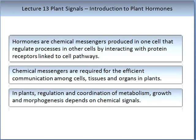We will start this topic on plant hormones with a definition of a hormone. A hormone is a chemical messenger produced in one cell that regulates processes in another cell by interacting with protein receptors which are linked to cell pathways. Chemical messages are required for efficient communication among cells, tissues, and organs in plants. In plants, regulation and coordination of metabolism, growth, and morphogenesis depends on chemical signals.